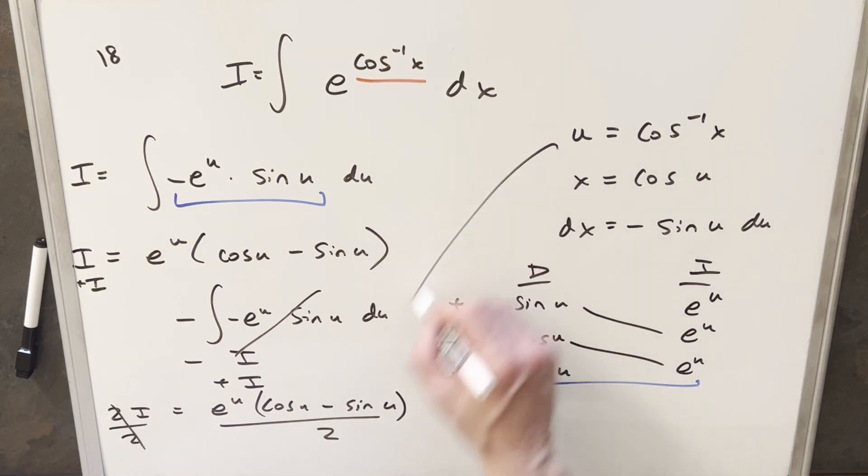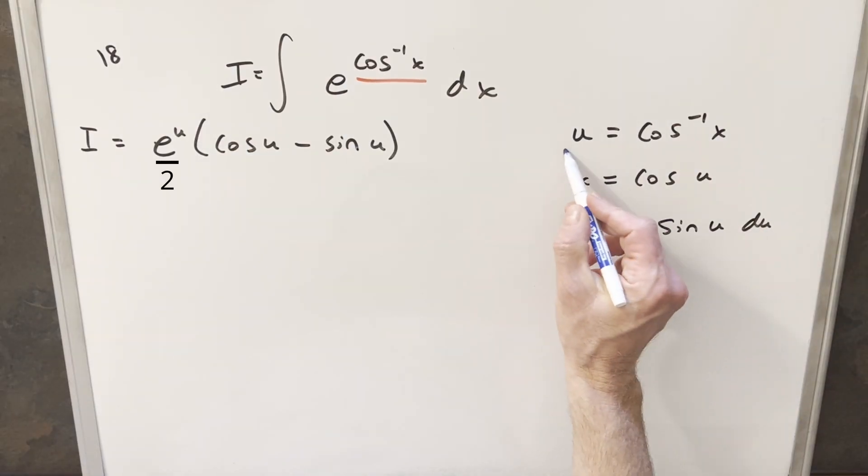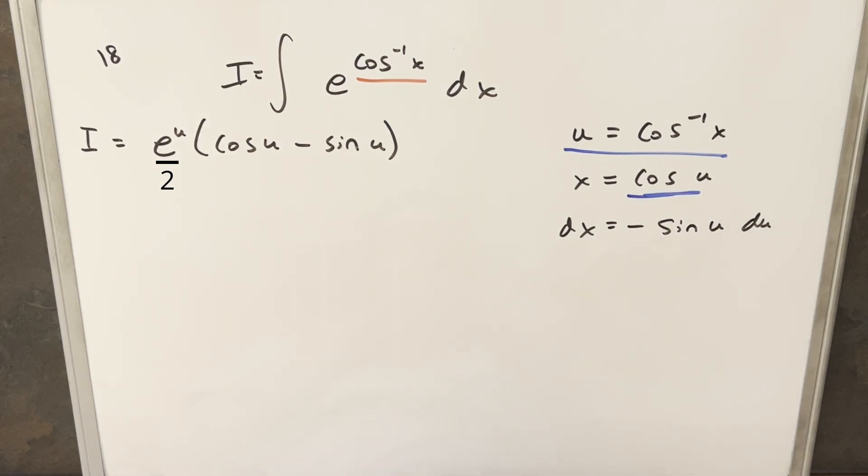And so all we need to do here is we just need to back substitute in order to finish this off. Now one thing on the back substitution, we already have our value here for u. And we have here a value for cos(u). We would just like a value for sin(u). What I can do for that is I'll just draw the triangle really quick and we can solve for that. So drawing this, the angle on this is going to be u. So we'll have our u.